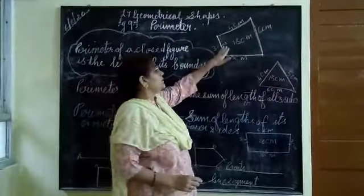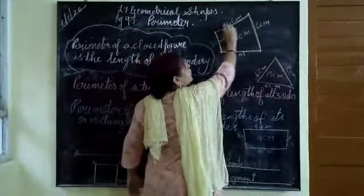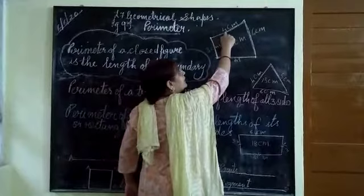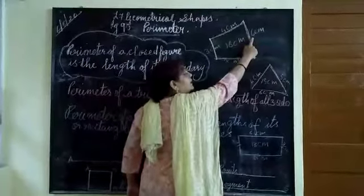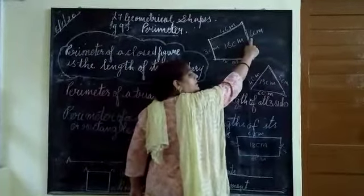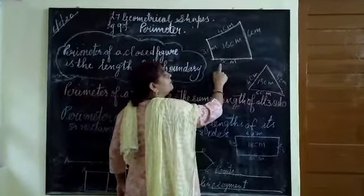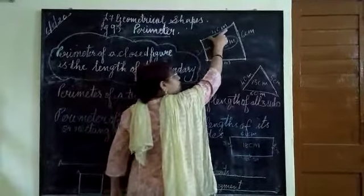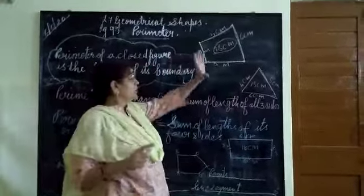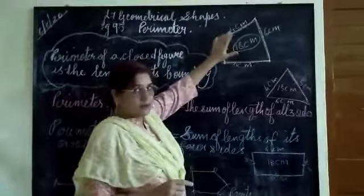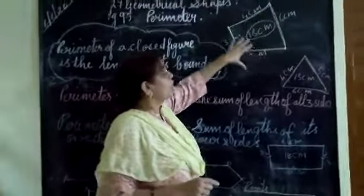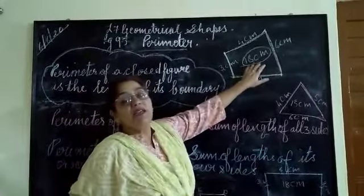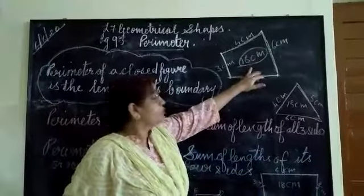Now, what is perimeter? Perimeter will be 3 plus 4 plus 6 plus 5. So, 3 plus 4 is 7, 7 plus 6 will be 13, 13 plus 5 will be 18. The total sum means we have to add all the sides of any figure and then we will get the perimeter of that figure, whichever figure we are drawing.